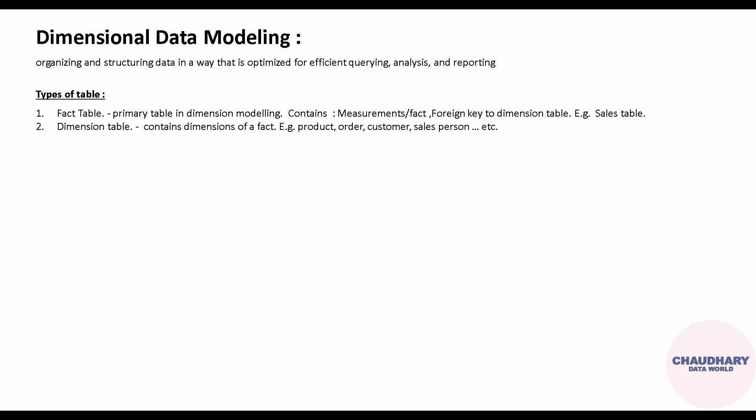In layman's terms, the fact table is a summary table where we store our summary data. The details are stored in separate tables. For example, for the sales table, the details about a particular product — like its serial number, manufacturing date, and expiry date — are captured in a separate product table. So all those minute-level details are captured in the dimension table, which is a detailed table, while the fact table is the summary of the overall system.